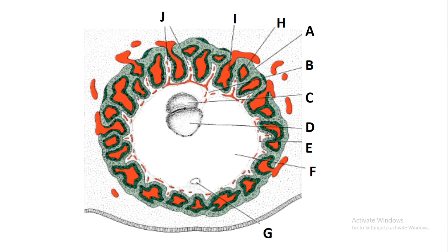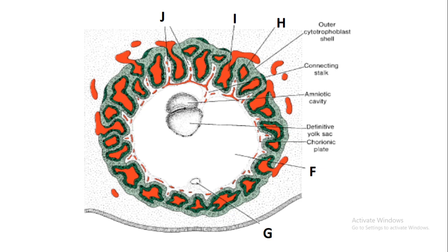In the next diagram, A is simply the outer cytotrophoblast, which is surrounded by the syncytiotrophoblast to be labeled later. B is the connective stalk, which is the future umbilical cord. C is the amniotic cavity. D is the definitive yolk sac. E is the chorionic plate. F is the chorionic cavity. G is the exocoelomic cyst. H is the intervillous space. J is the tertiary stem villus.